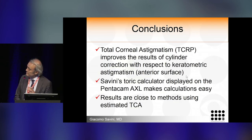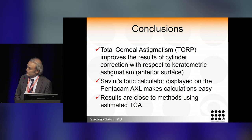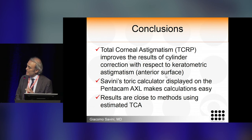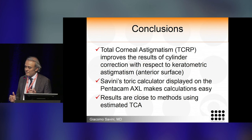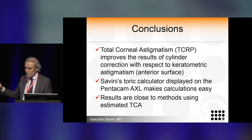In conclusion, total corneal astigmatism improves the results of cylinder correction compared to K1 and K2 simulated keratometry. With the Savini toric calculator, this calculation is easy because everything is automatic on the Pentacam AXL, and the results are very close to those of Barrett — but in this case we have direct measurements rather than estimations.